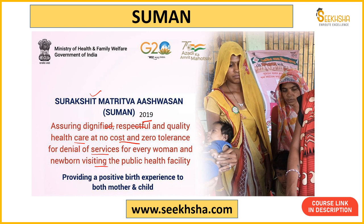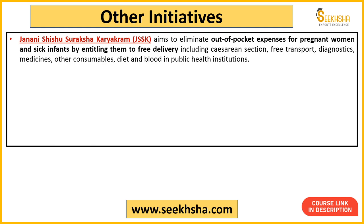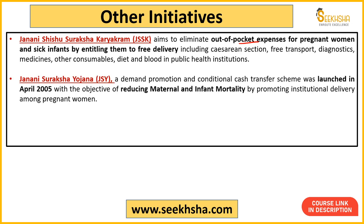Important initiatives will also be covered separately in more detail. Going through the document: Janani Shishu Suraksha Karyakram — its work is to reduce out-of-pocket expenses for pregnant women or families with sick infants. It provides free delivery including C-section deliveries, free transport, diagnostics, medicine, diet, and blood at public health institutions to reduce out-of-pocket expenses. Janani Suraksha Yojana was launched in 2005 — it is a cash transfer scheme with the objective to reduce maternal and infant mortality. Pregnant women are encouraged for institutional delivery through this scheme.